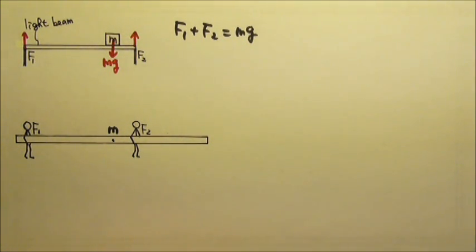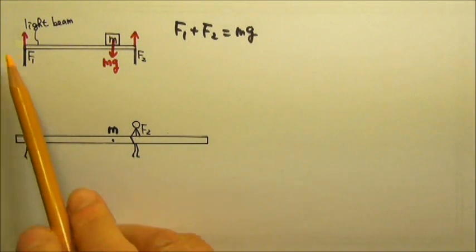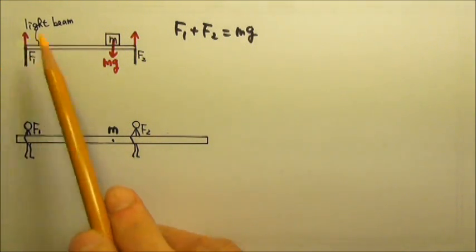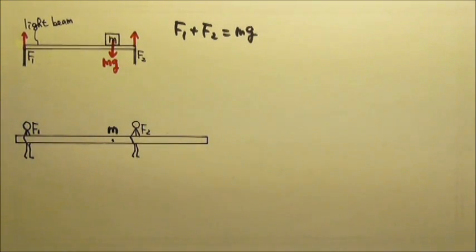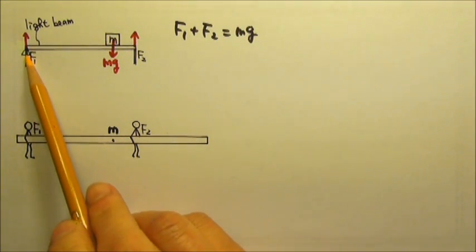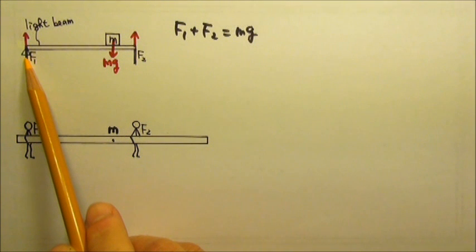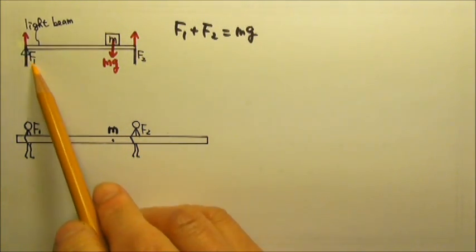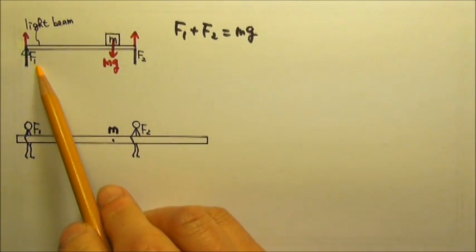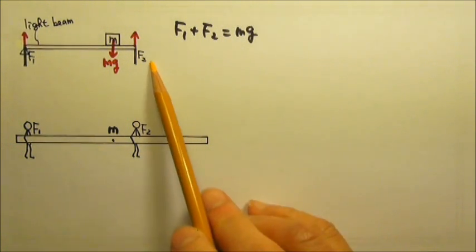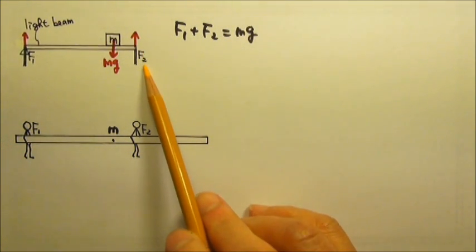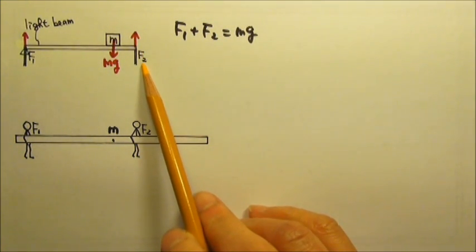We can choose to have our pretend fulcrum anywhere we want. The most convenient locations will be either at F1 or F2. For example, if I use F1 as my fulcrum, that means F1 does not give me any torque, so F1 would not show up in our torque equation. When we write our torque equation, there will be only one unknown, F2, so we will be able to solve for F2 right away.